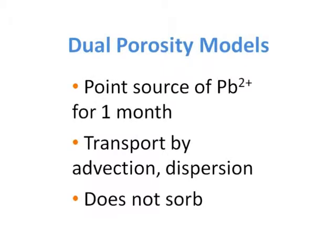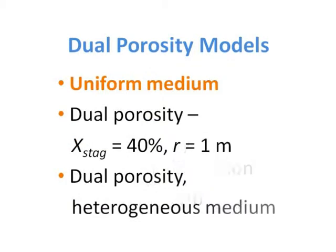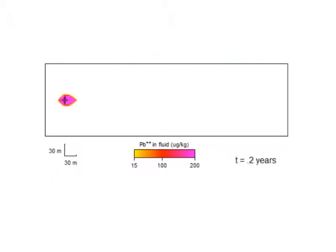The first example describes transport of a non-reactive solute through a single porosity homogeneous domain, for reference. The contaminant enters a pristine aquifer through a point source. The plume migrates laterally through the domain due to advection and spreads due to hydrodynamic dispersion, which we've modeled using Fick's law.